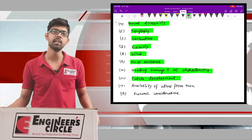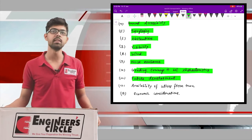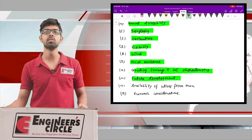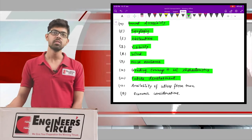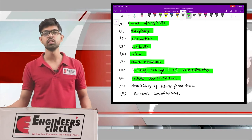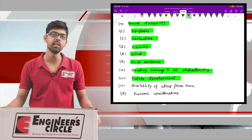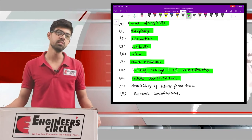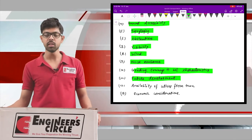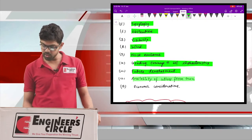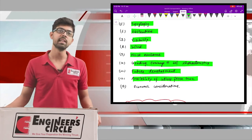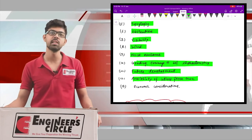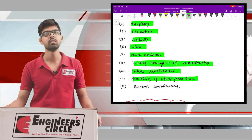The next factor is future development — whether development around the locality will increase the number of passengers using the airport, thereby increasing the profit margin for the aviation department. Also important is the availability of utilities from nearby towns, such as electricity lines, water supply, gas pipelines, hospitals, and markets near the airport site.